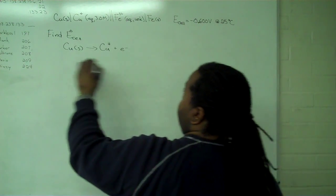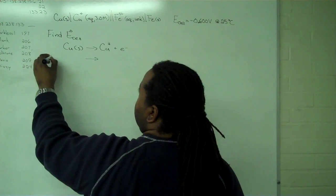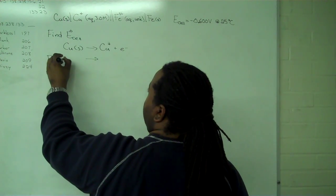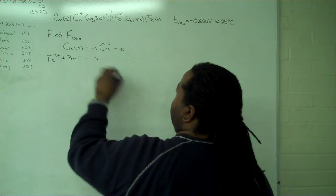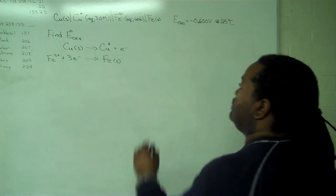The second half reaction then is the reduction of iron 3 plus with three electrons going to solid iron. Once we have our half cells,